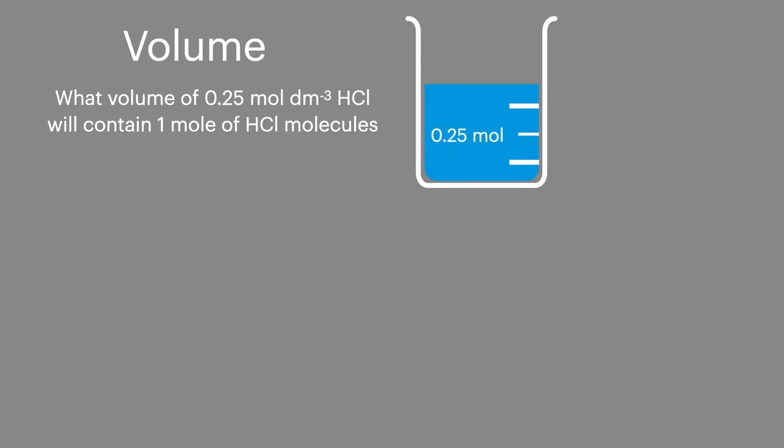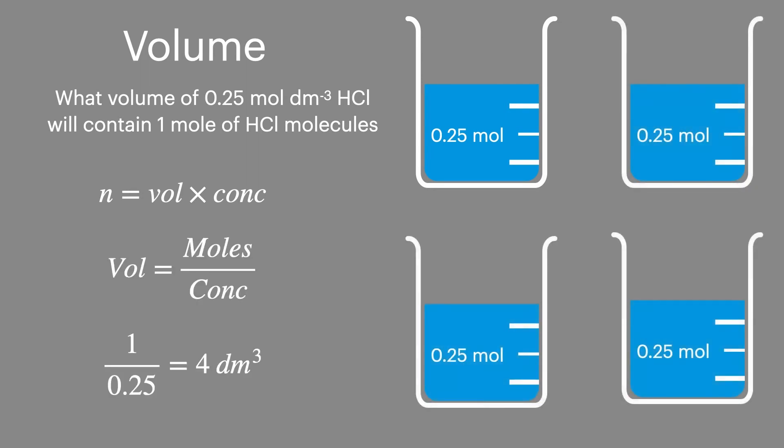In the third example, we're going to calculate what volume of 0.25 moles per decimetre cubed will contain one mole of molecules. Starting with our equation, we'll then rearrange it to get volume, and then finally substitute in the numbers to calculate our final answer.